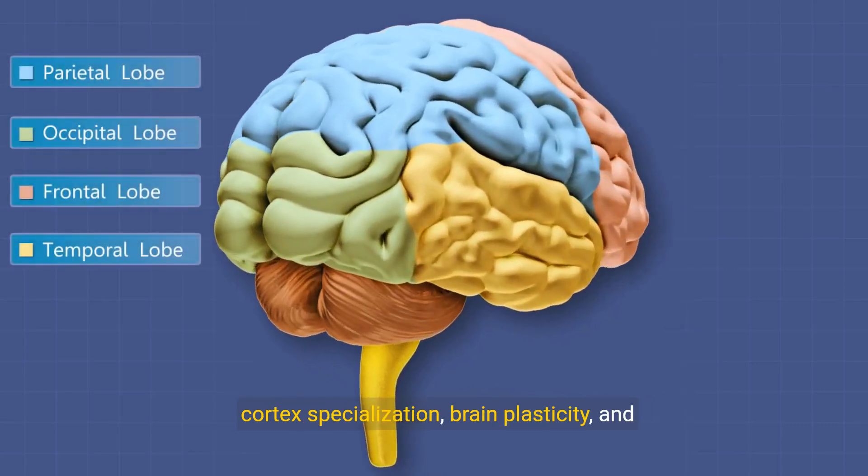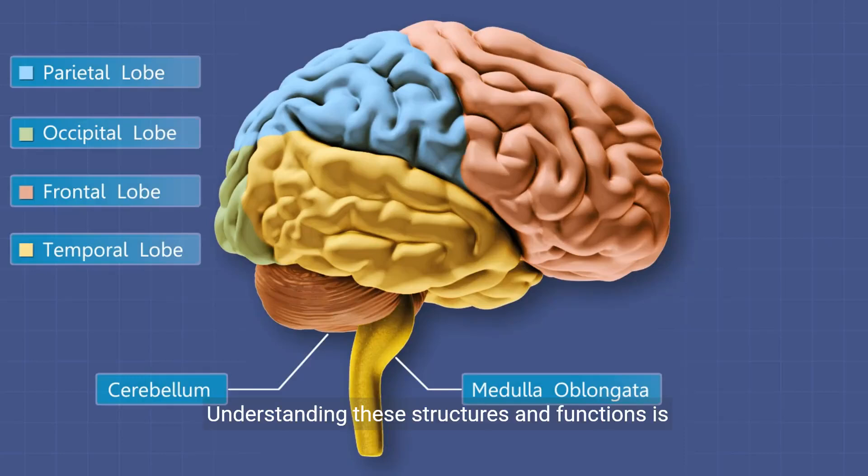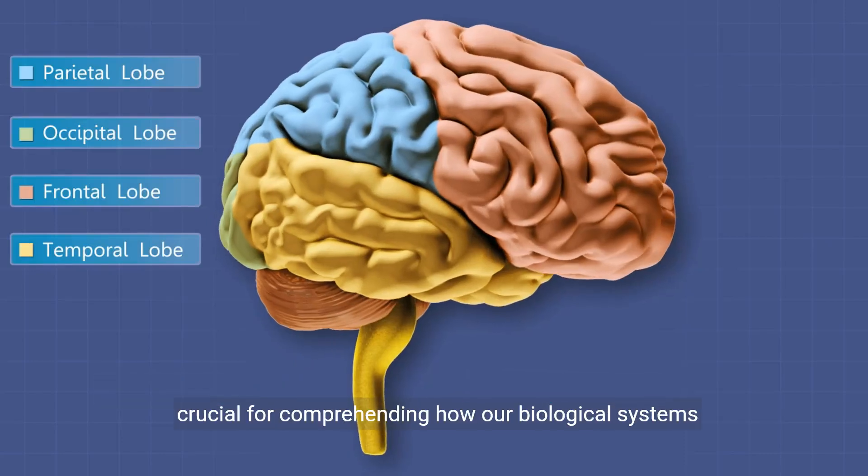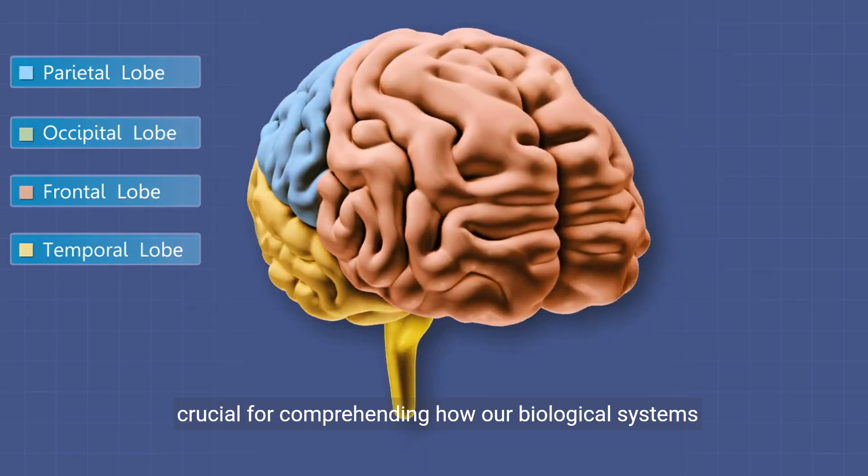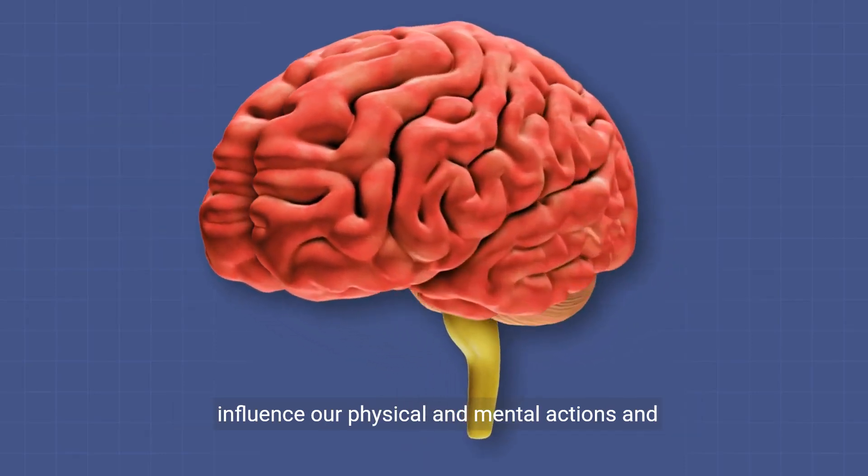We also covered language areas, cortex specialization, brain plasticity, and various brain research methods. Understanding these structures and functions is crucial for comprehending how our biological systems influence our physical and mental actions and responses.